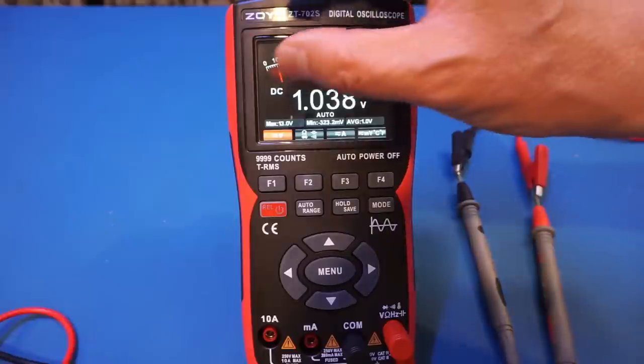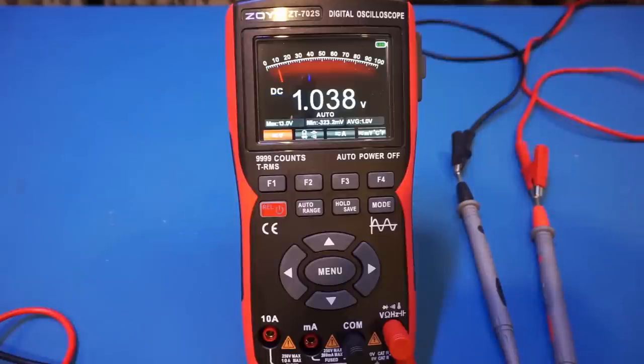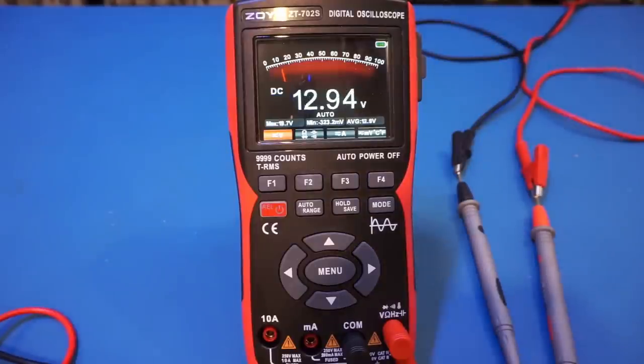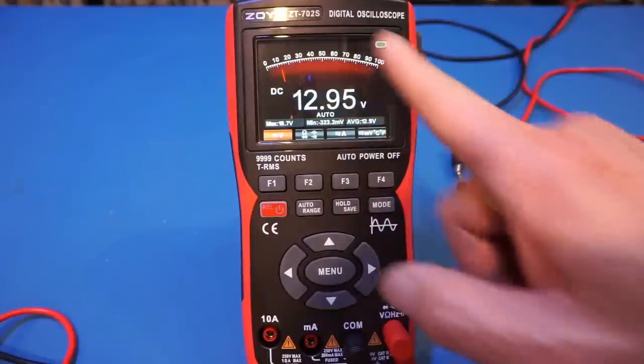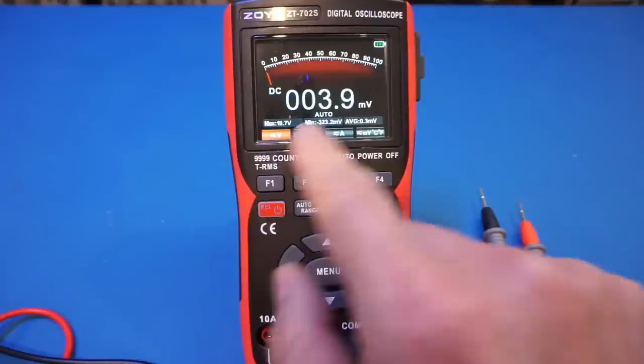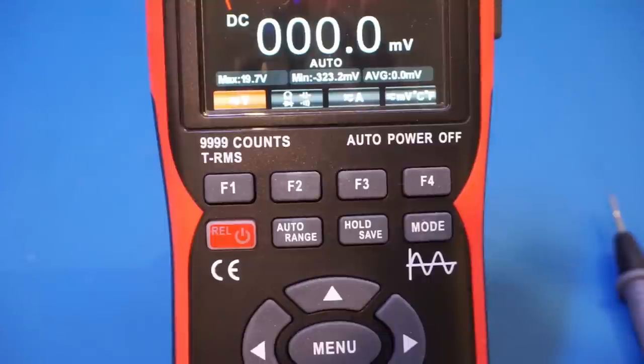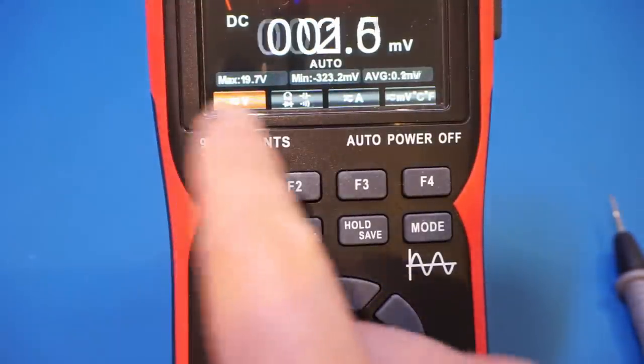This meter has a large portion dedicated to this bar graph. So I'm curious to see how fast the bar graph updates. For that, I hooked the meter up to a variable power supply. And let me adjust the output voltage and see how fast the bar graph updates. Well, it appears it actually does not update that fast at all. So it appears that the update rate is probably similar to the display update, which is spec'd at three times per second. I suppose the bar graph does give you some indication of where you are in the current range. One excellent feature of this multimeter is that it has the maximum, minimum, and average displayed at all times. So you get a sense of the variation of the input signal here.